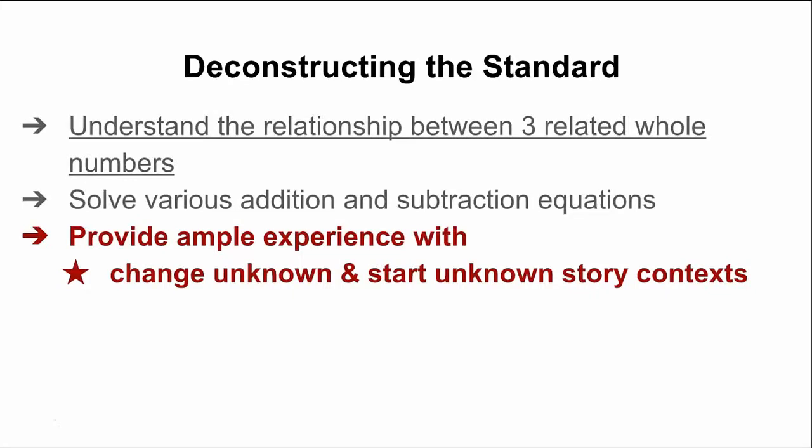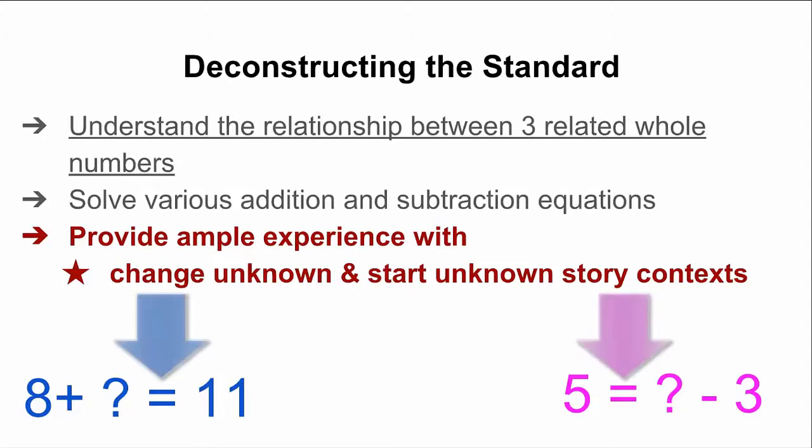When 6 and 7 year olds struggle to solve change or start unknown problems like 8 plus question mark equals 11 or 5 equals question mark minus 3, pay particular attention to the child's thinking. If a child says 19 for the first equation or 2 for the second equation, it's likely because the student does not understand the meaning of the equal sign. As a teacher, you will want to check out the video on 1.OA.7 to address such misconceptions.